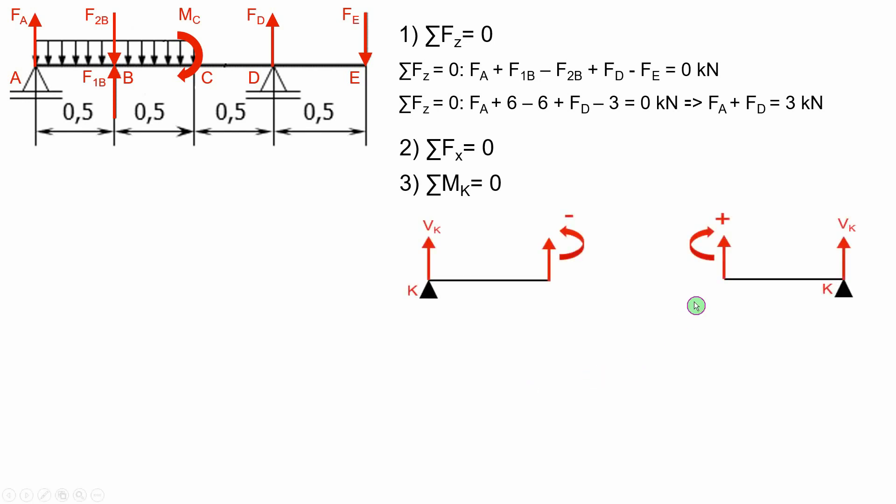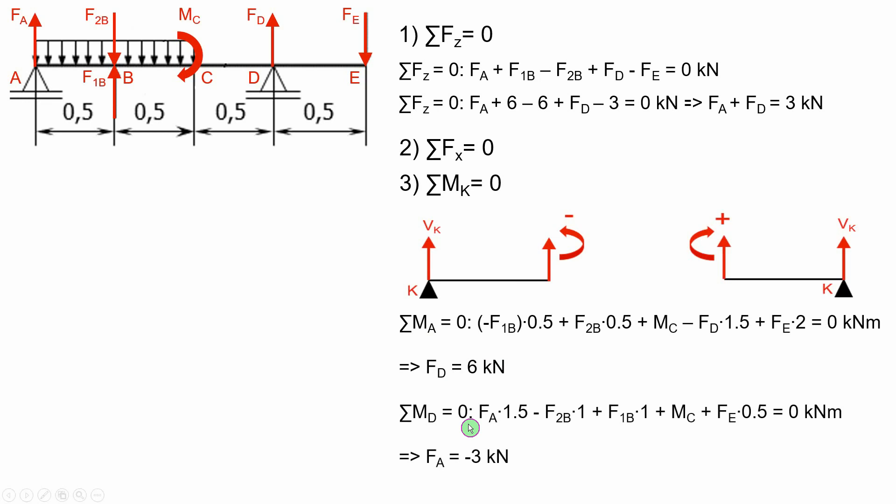Relative to any given node, if the force acts upwards to the left of the node, it will produce positive moment. And if the force acts upwards to the right of the node, it will produce negative moment. First we apply the equation for point A and we get the value for FD. And after that we apply the equation for point D and get the value for FA.